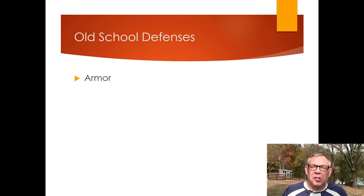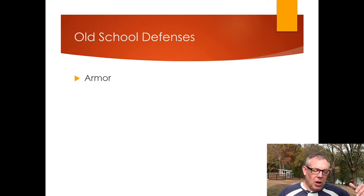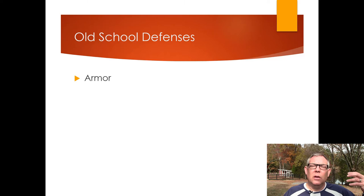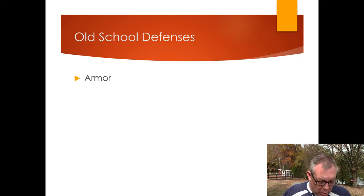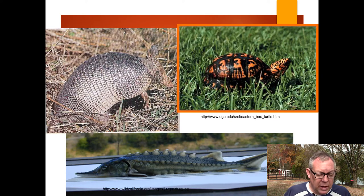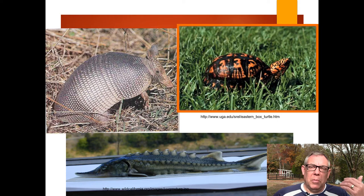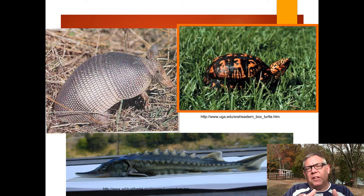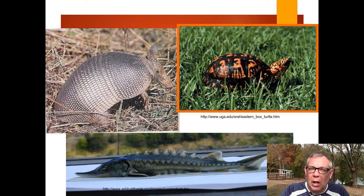Some other cool prey defenses include what I call old-school defenses — armor. In more ancient organisms you saw much more armor, but over time organisms evolved to be faster and more mobile, which was better than bulky armor. You still see some today: turtles have big bulky shells, armadillos have armor, and the sturgeon fish has big plates. Fish used to have heavy external armor a few hundred million years ago, but evolved to be faster and more flexible. Still, some organisms use a simple shell as their protection against a predator.